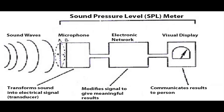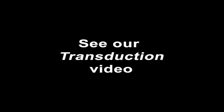SPL stands for sound pressure level. A sound source's intensity is measured by the amount of pressure placed on air molecules when they're disturbed to produce sound. This is exactly what an SPL meter measures, hence its name. It measures intensity through a process called transduction, which you can learn more about in one of our other videos.